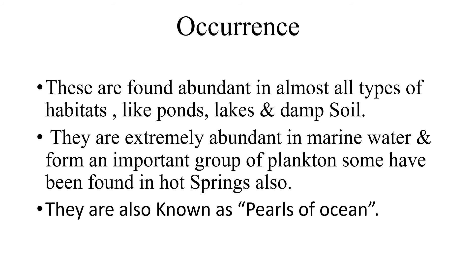Now, occurrence — where are they found? They are both freshwater as well as marine. They are found abundant in almost all types of habitats like ponds, lakes, and damp soil. They are extremely abundant in marine waters and form an important group of planktons. Some have been found in hot springs also. They are also known as pearls of the ocean.